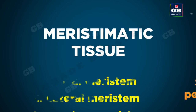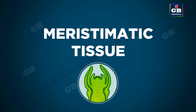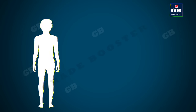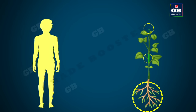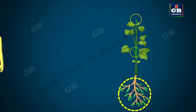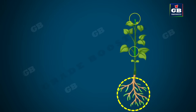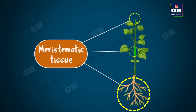First let us learn about meristematic tissue. In our body growth is uniform — all parts of our body grow uniformly. But in plants, growth is observed only in certain regions. The reason for this is that the tissues responsible for growth in plants are located only in certain parts of the plant. This special tissue is called meristematic tissue.